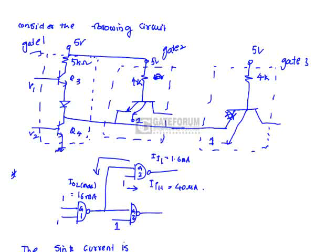Whenever gate two is low, it is taking a current of 40 microamps, similarly for gate three. Now tell me the sink current—how much current is passing through Q4 whenever the output of the first gate is low and the conditions given for gate two and gate three are shown in the figure.